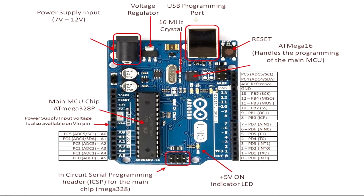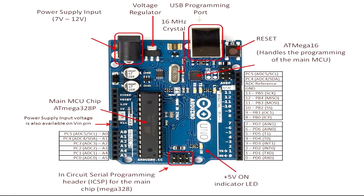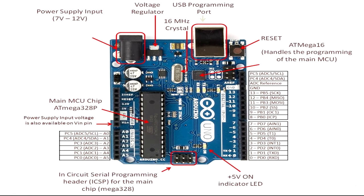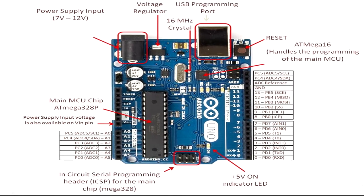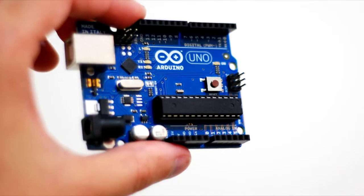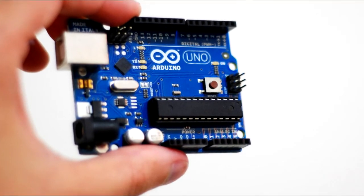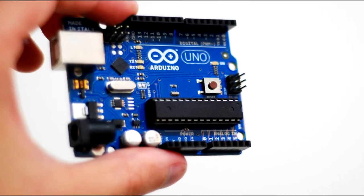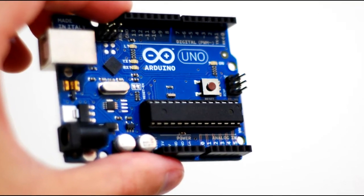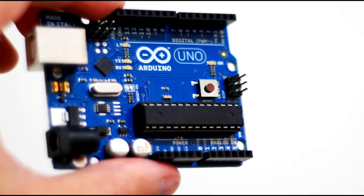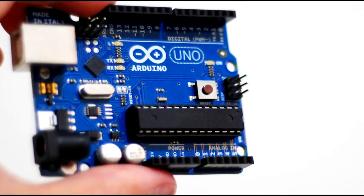This is the Adreno Uno. Adreno Uno is an Atmega 328P microcontroller based board. This is a 16MHz crystal. This is a USB port. This is the ICSP header. This is the reset button. This is the AC to DC adapter. This is the USB cable and battery. This is the Adreno Uno.